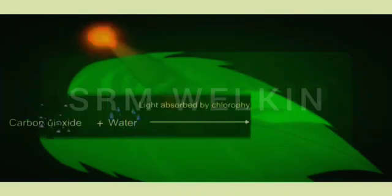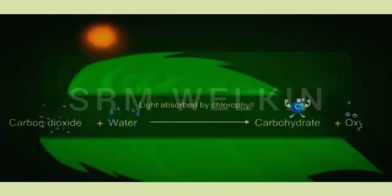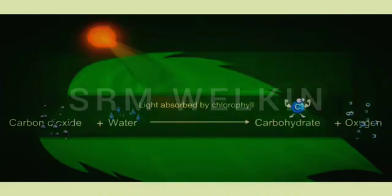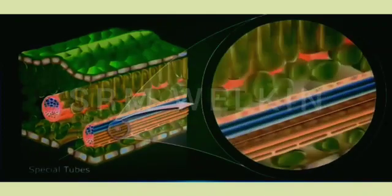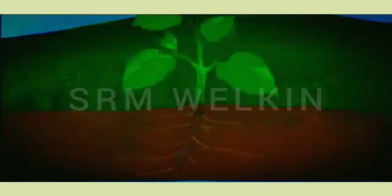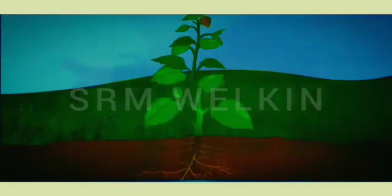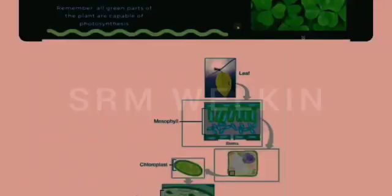The equation for photosynthesis is: carbon dioxide plus water, in the presence of sunlight and chlorophyll, gives us carbohydrate plus oxygen. The glucose produced during photosynthesis is carried through special tubes to different parts of the plant.